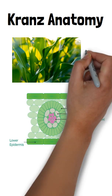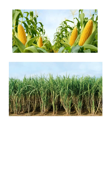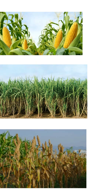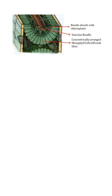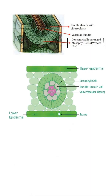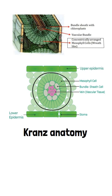Kranz Anatomy is a specialized leaf structure found in C4 plants like maize, sugarcane, and sorghum, which enhances their photosynthetic efficiency. The term 'Kranz' means 'wreath' in German, describing the ring-like arrangement of cells in the leaf.